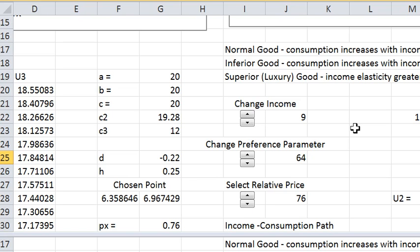We can change income, which is what we're concerned with. There is a control for representing changes in preference that I'll speak about a little bit later, and you can also select a relative price. In this case we're actually taking the price of good Y to be one, so the relative price is the price of good X. So those are your three controls.